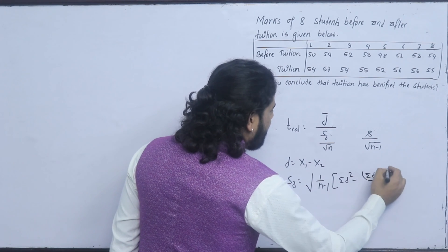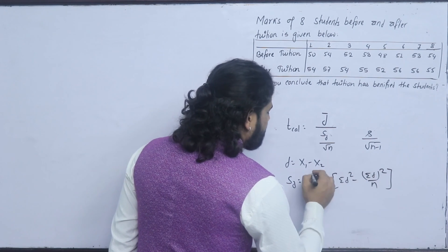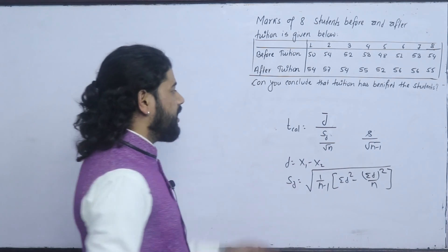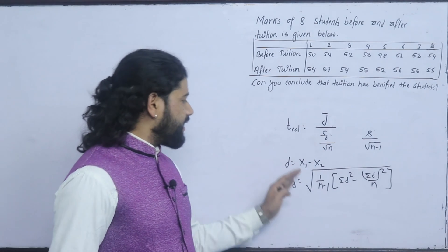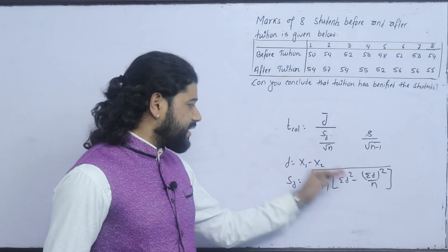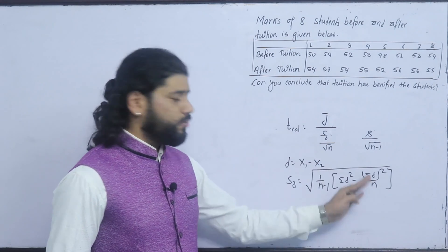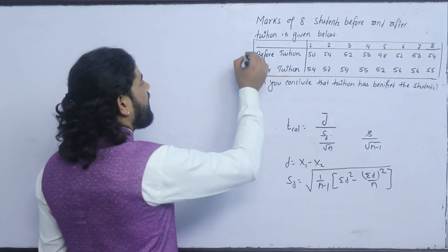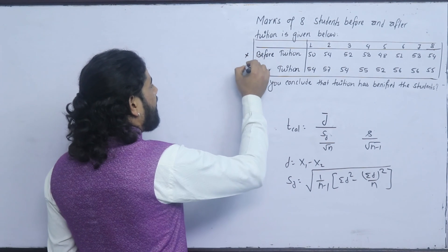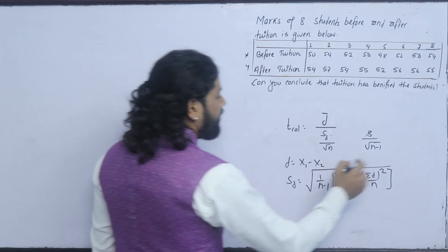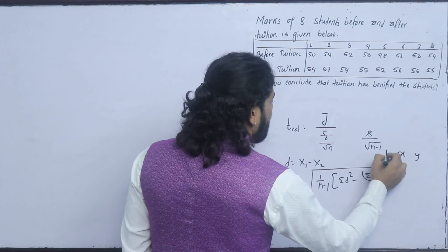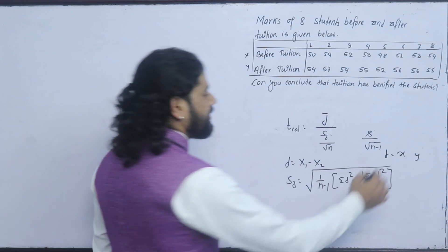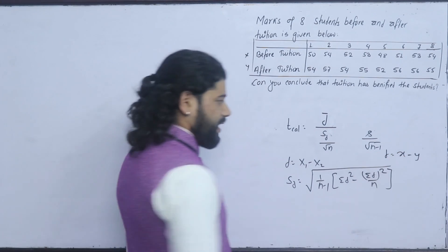This can be negative and positive. What difference does d = x1 - x2 make versus x2 - x1? Before is x and after is y. Differentiating x - y and y - x gives the same result.